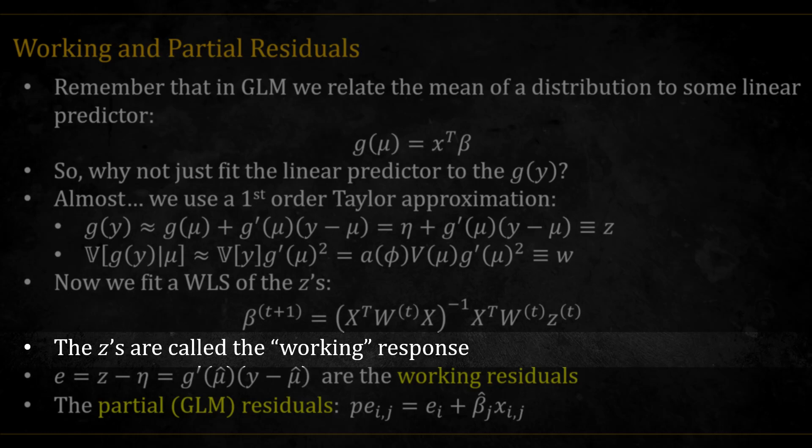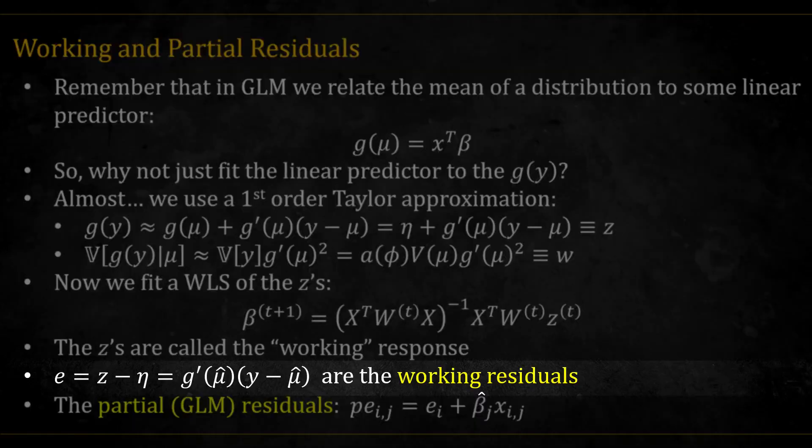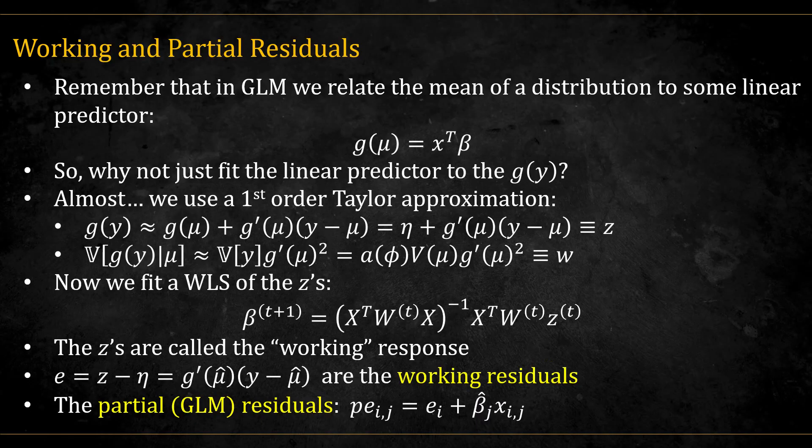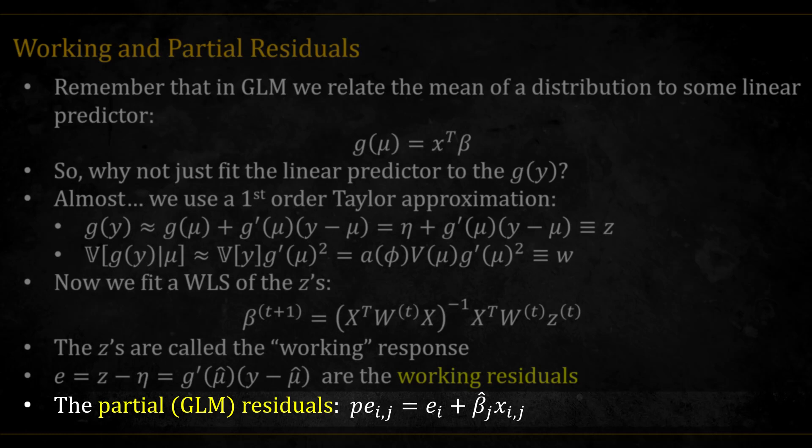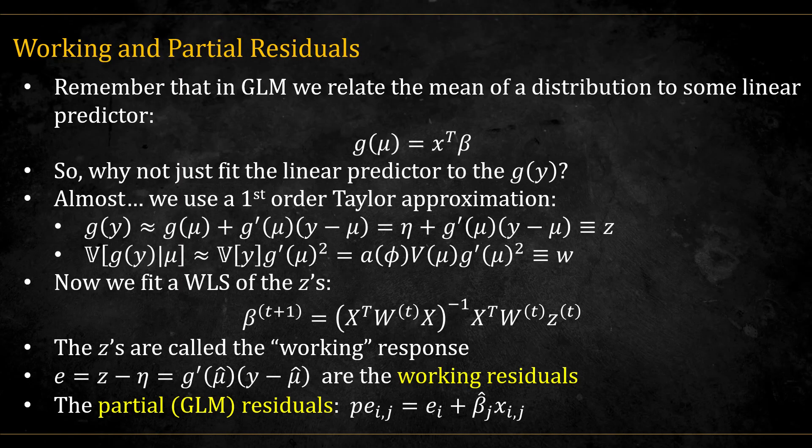The z's are called the working response because they are the pseudo-response we are working with in IRLS. And subtracting the linear predictor, we get the working residuals e = z - η = g'(µ̂)(y - µ̂). The partial residuals are constructed by adding the relevant βj xj to the working residuals. Now we can plot the partial residuals against the corresponding x, and hopefully this will reveal the true relation between x and the full linear predictor.